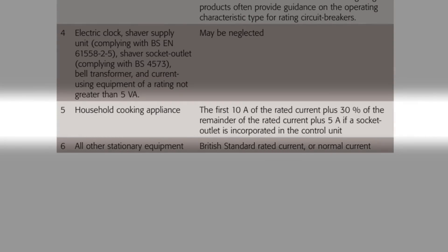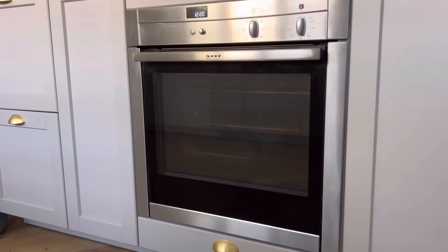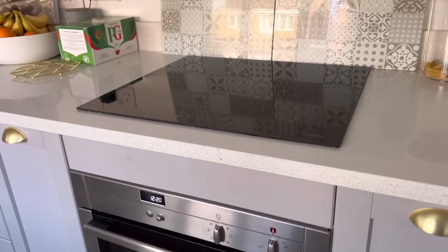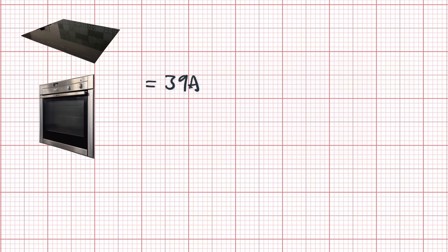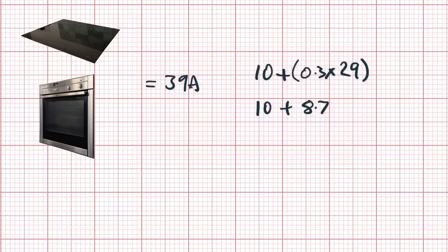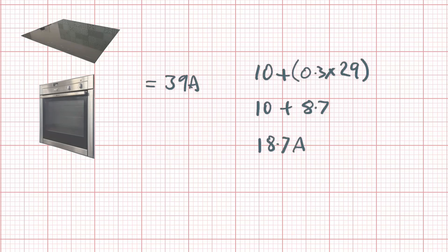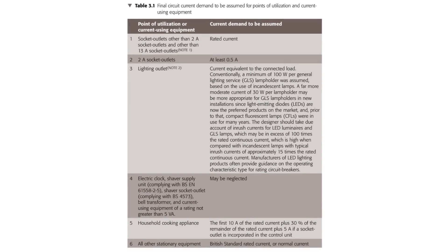Then we've got household cooking appliances. The direction is to calculate the first 10 amps of the rated current, 30% of the remainder, and then add 5 amps if there's a socket outlet on the control unit. Here we've got an oven and hob on the same circuit, so we'll treat this as one appliance. The combined current rating of the hob and oven is 39 amps. We take the first 10 amps and add 30% of the remaining 29 amps, which is 8.7 amps. There's no socket outlet on this cooker control, so the current demand for this circuit is 18.7 amps.